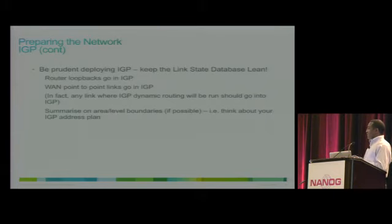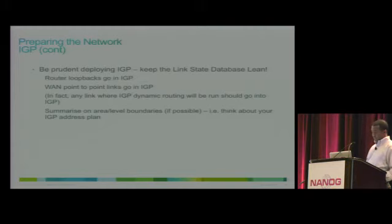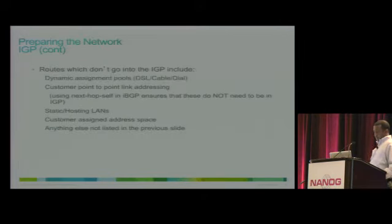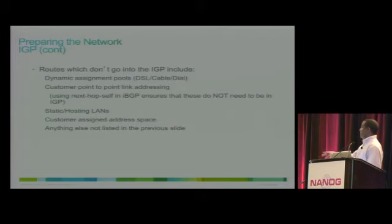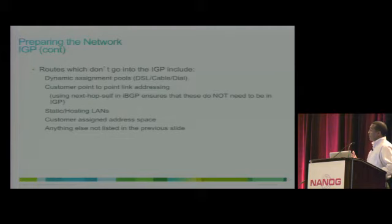It's very important that your link state database is lean. You don't want to inject BGP into your IGP or inject your customer networks into IGP — that would make your IGP large and reduce convergence time. If you have customers being aggregated through DSL or customers with assigned address space, inject those prefixes into IBGP. You don't need to put them in IGP.